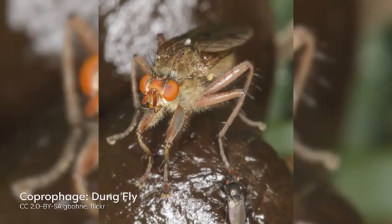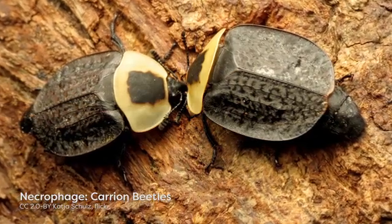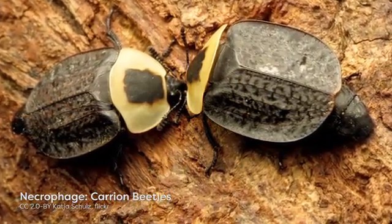Many coprophagous and necrophagous insects are multivoltine, because their development must be fast to take advantage of their ephemeral resources, dung and carrion. This fast development is associated with the production of multiple generations per year.